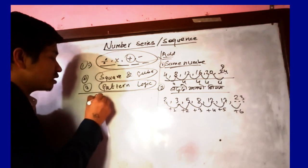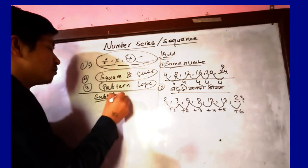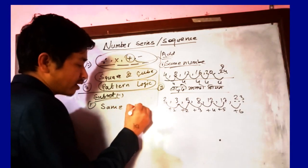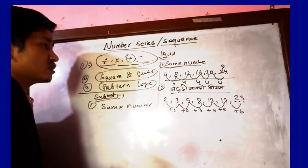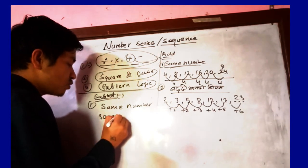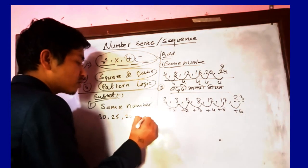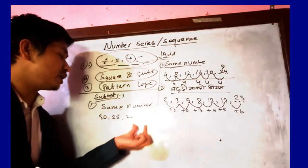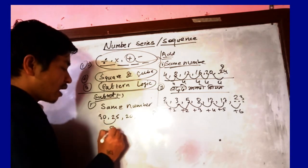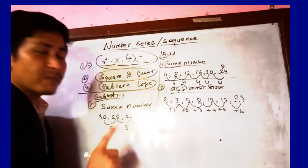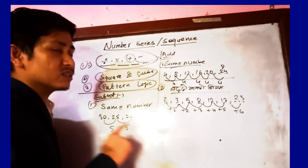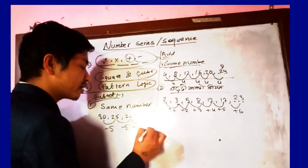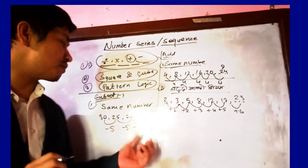Now for subtraction. Subtracting the same number down. Take this example: 30, 25, 20, 15. The same number, 5, is being subtracted each time: minus 5, minus 5, minus 5. So the next number is 10.